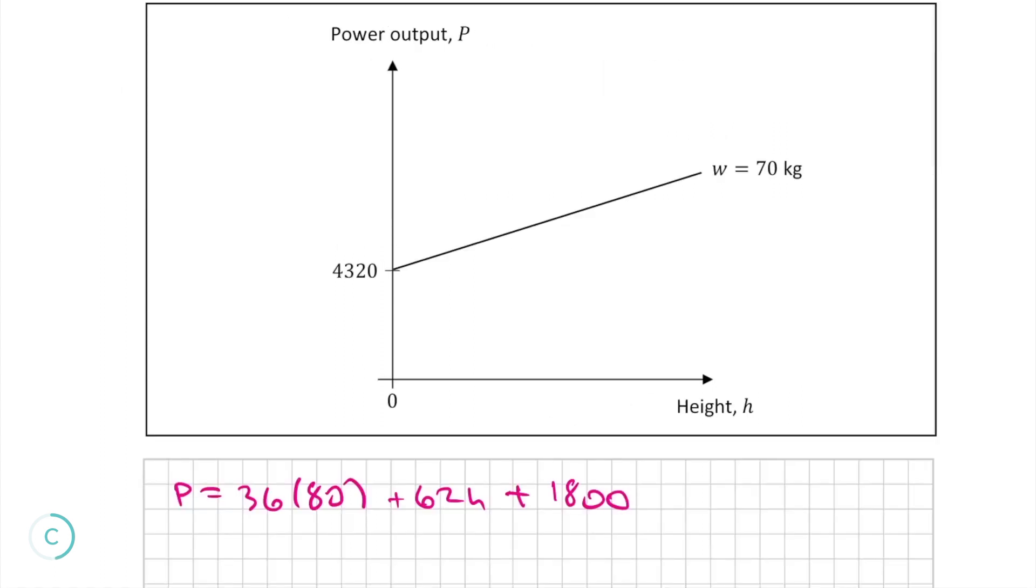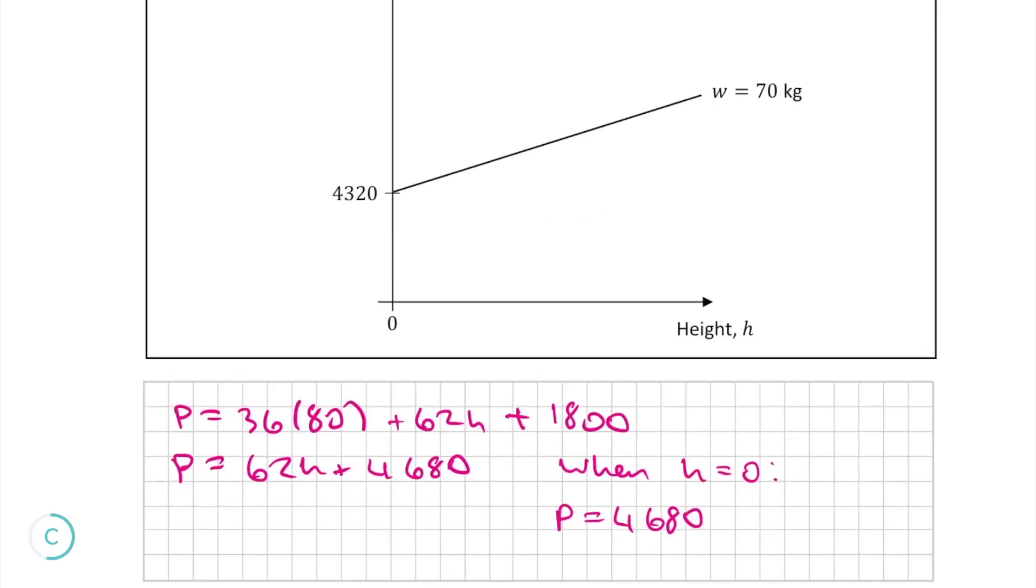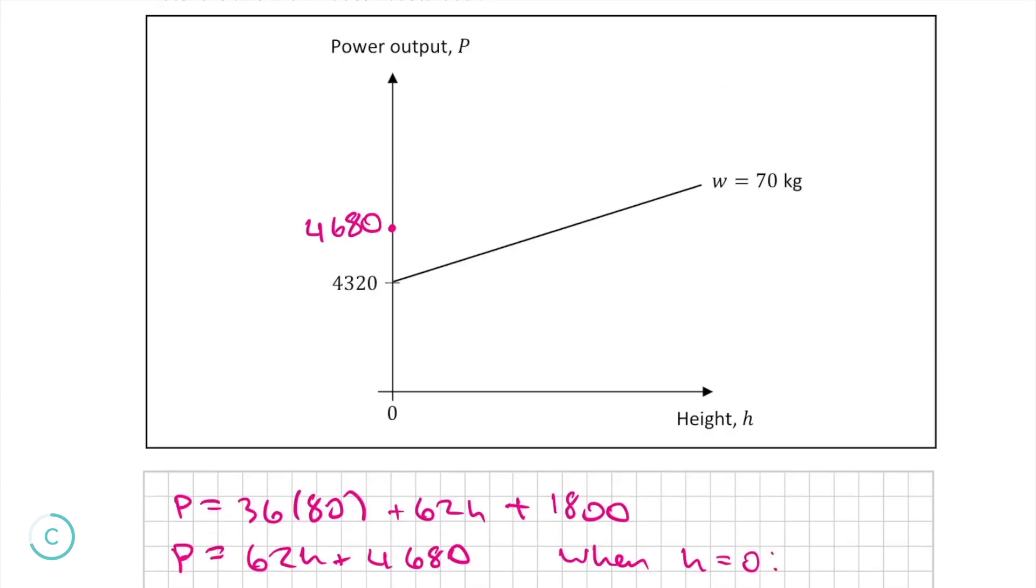So here's our new equation for p when w is equal to 80 and h is unknown. From this formula, we can see that when h is equal to 0, p is equal to 4680, which is the point at which the graph cuts the y axis. Now all we have to do is draw in the line, starting from 4680.